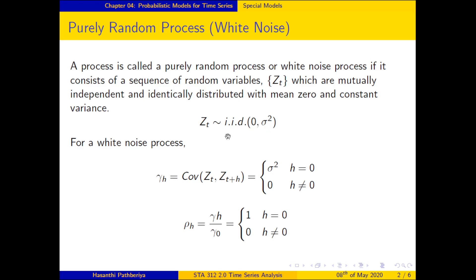For a purely random process, the autocovariance function γ(h) equals the variance when h equals zero, and equals zero at any other lag, because the observations are independent. Similarly, the autocorrelation function equals one at lag zero and equals zero at any other lag. These are the special properties of a purely random process.